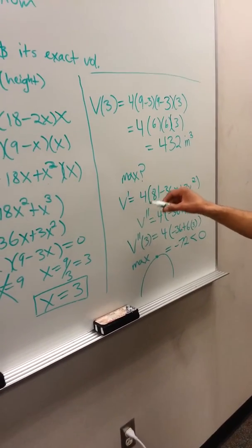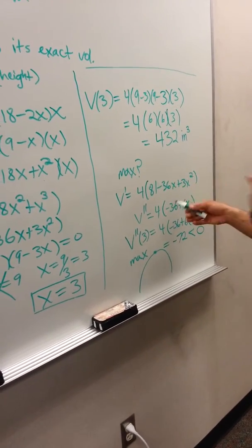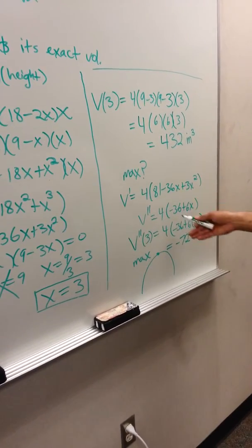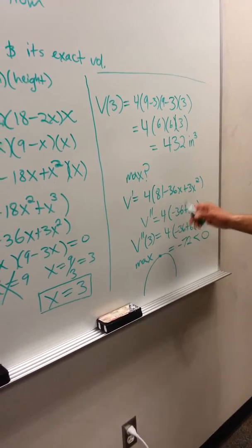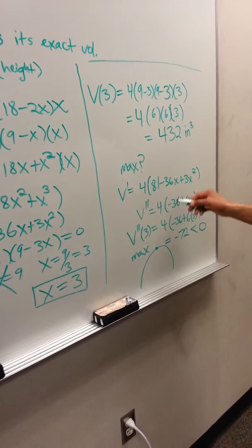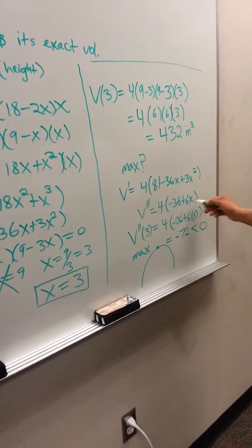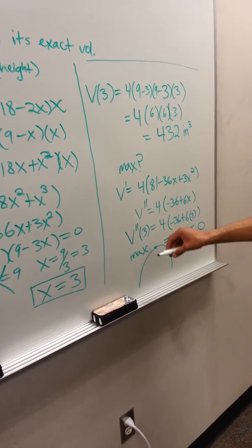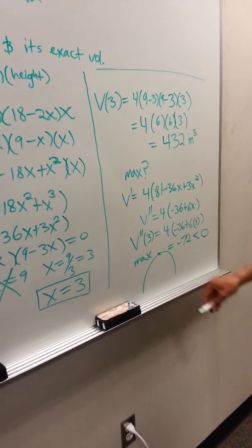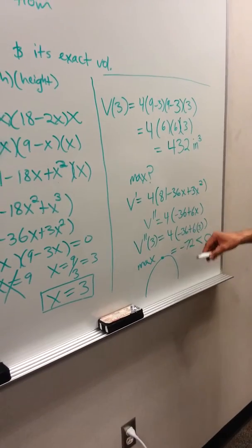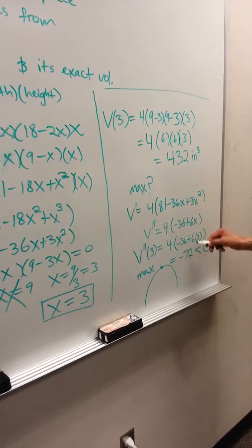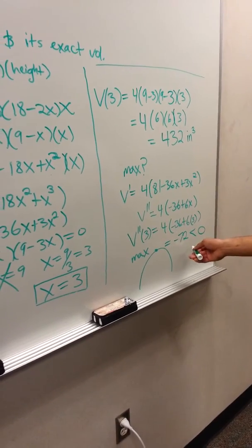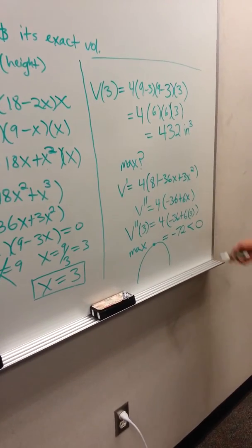I was left with 4(-36 + 6x), and I did the second derivative with 3 plugged in for x. So we get 4(-36 + 6×3), which results in 4(-36 + 18) = -72, which is less than zero.